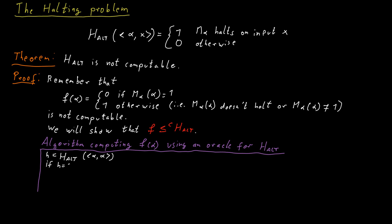If this is not the case, then we return one because we know that M_alpha of alpha does not terminate and therefore we know that F(alpha) should be equal to one. So this is the correct answer in this case.